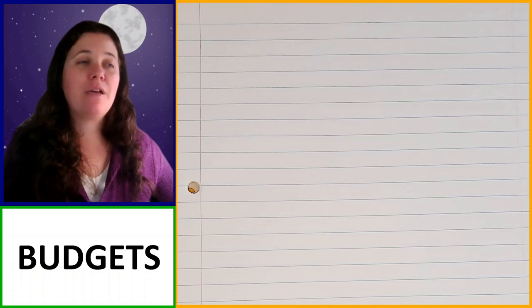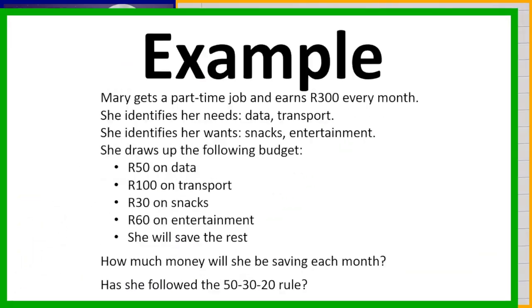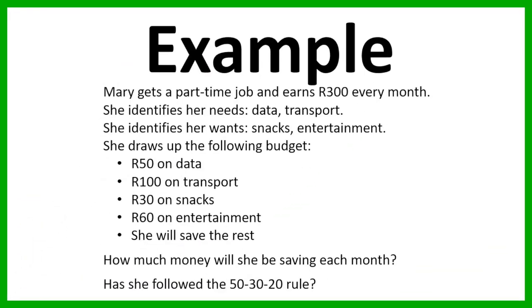Okay, so let's have a look at our first example. In this example, we have Mary, who gets a part-time job and earns R300 every month. She identifies her needs: data and transport. She identifies her wants: snacks and entertainment. She draws up the following budget. R50 on data, R100 on transport, R30 on snacks, R60 on entertainment, and then she plans to save the rest. How much money will she be saving each month?